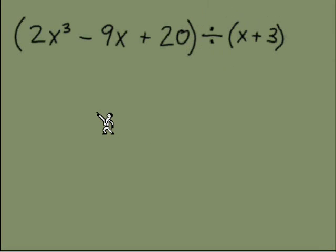Okay, here's another example of dividing polynomials. This one has a little bit of a twist. If we look at the dividend, we have 2x³ - 9x + 20, so we have an x³ term and also there is no x² term. It's important for us to see that there is a missing term here.